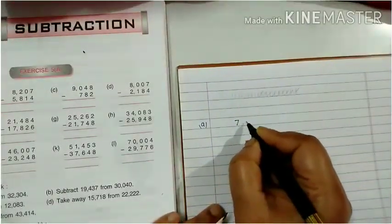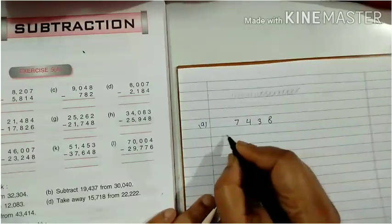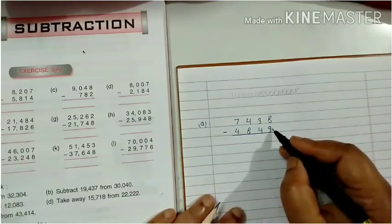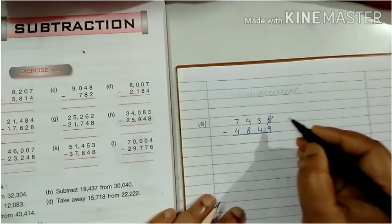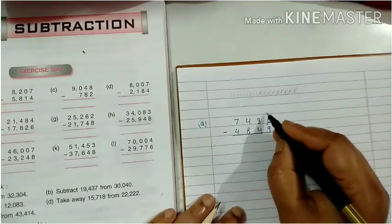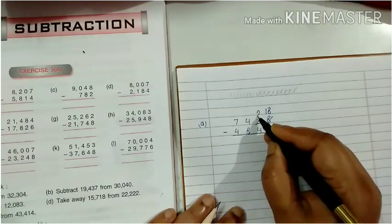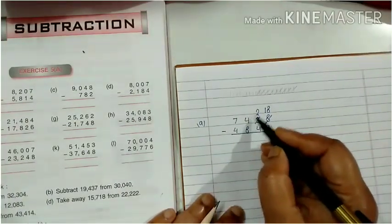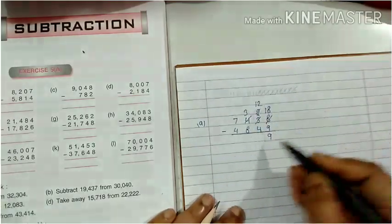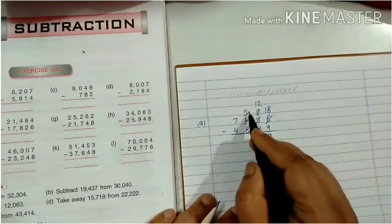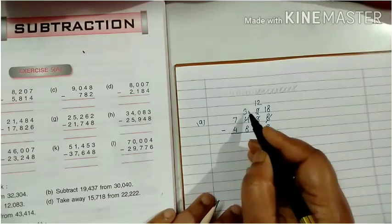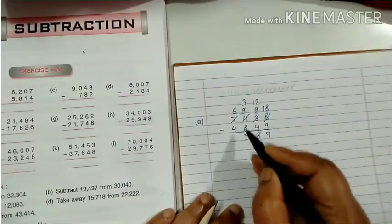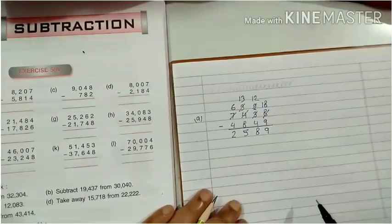The question is 7,438 minus 4,849. So 8 minus 9 is not possible, so we will take a carry from the adjacent place — from 3. It will become 18 and it will become 2. 18 minus 9 is 9 here. And now it is 2, so 2 minus 4 is not possible. We will carry again — it will become 12. 12 minus 4 is 8. Now this is 3 and 3 minus 8 is not possible, so we will carry. It will become 13 and it will become 6. 13 minus 8 is 5. And 6 minus 4 is 2.